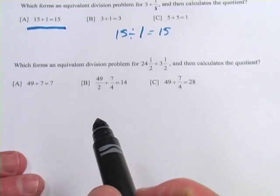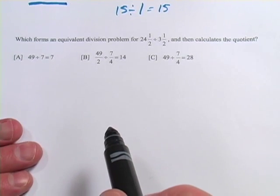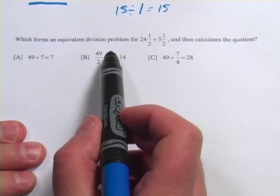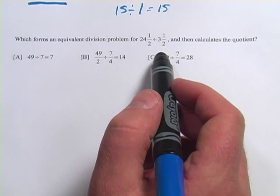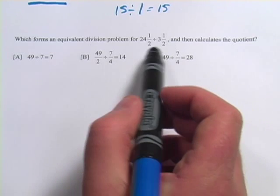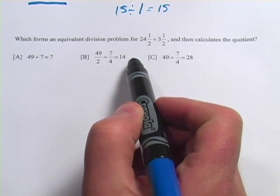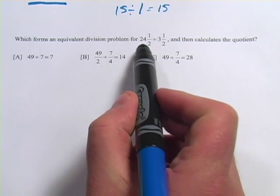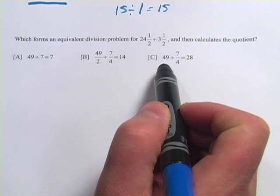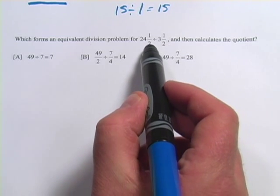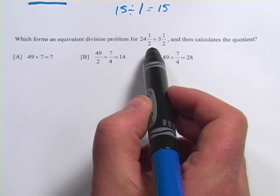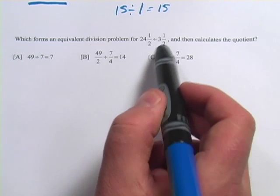Let's look at one more here. This one's quite tricky. It says, which forms an equivalent division problem for 24½ divided by 3½? And again, you could probably punch that into your calculator. You could maybe make it a little easier on yourself by typing in 24.5 divided by 3.5, and you'd get an answer. One thing that occurs to me to do when I see that ½ here, a 2 on the bottom, is to multiply both of these numbers by 2.